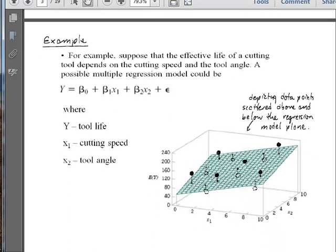So now we can go through and consider some examples. This one is from Montgomery and Runger. It is in Chapter 12. And they consider the life of a cutting tool, which depends on the cutting speed and the tool angle. So you might write down a regression model. So this y would be the tool's lifetime, and the x1 would be the cutting speed, and the x2 would be the angle at which you're cutting.